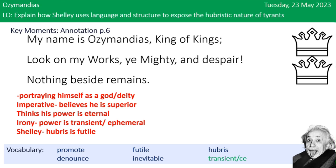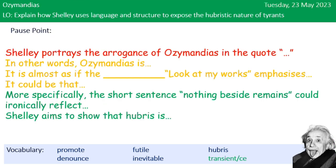Make sure you take a picture of the notes. We're going to use them to finish this paragraph: 'Shelley portrays the arrogance of Ozymandias in the quote...' — put the quote in — then use your notes and sentence starters to complete it. In conclusion, Shelley is showing that even the most powerful leaders will be forgotten in time. It is a reminder of the transience of human power and the importance of humility.